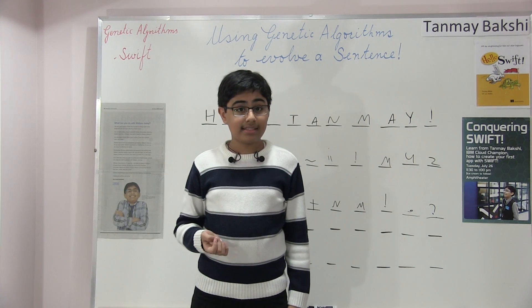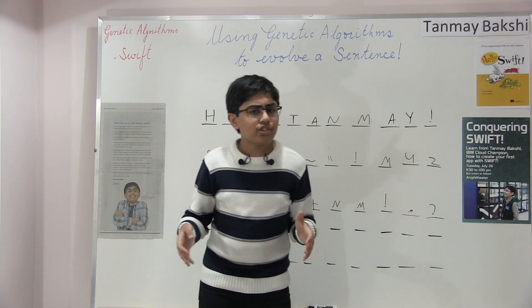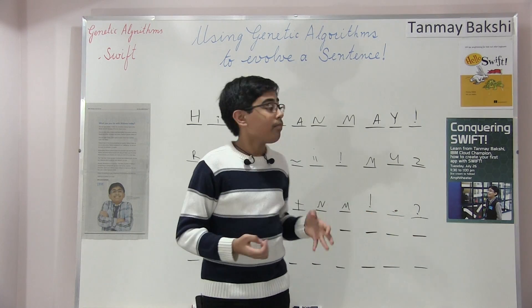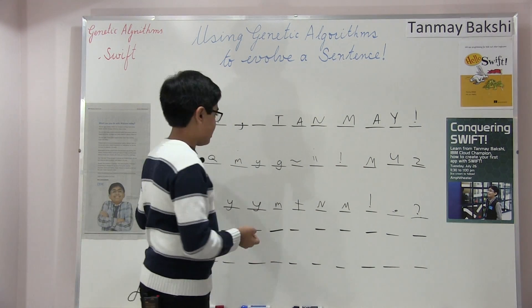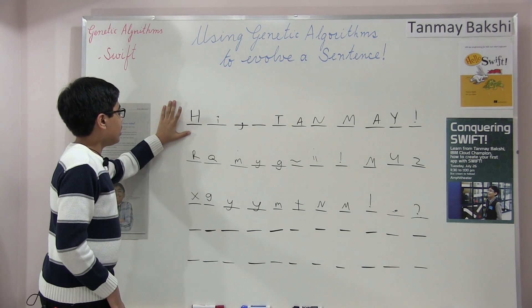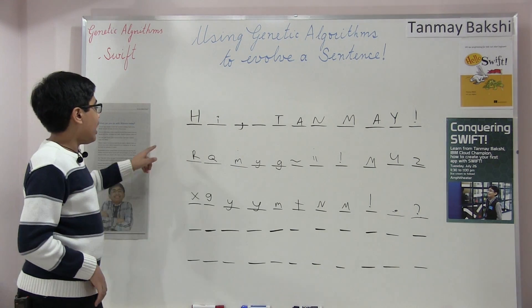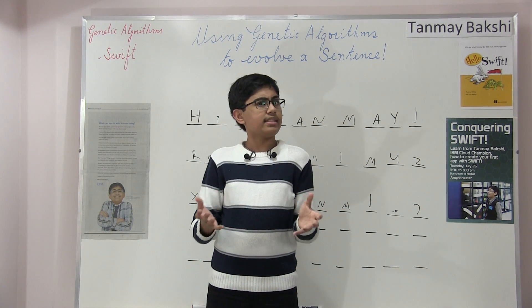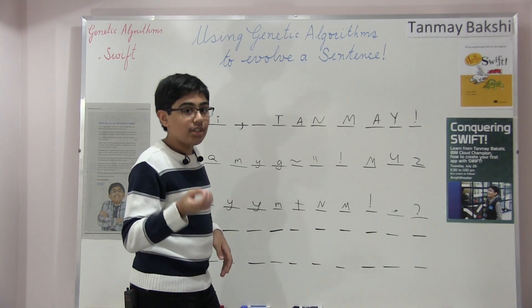There are actually quite a few stages to this. First, a genetic algorithm needs to have a population size. A population is essentially a group of individuals. In this case, an individual is a sentence — usually it would be a person or a neural network. Each character is a gene, one of the genes that make up that individual. Let's say 'hi Tanmay' is our target. All genes for this round will have the same length as that string, and our population size is around 2500 to 3000 individuals.